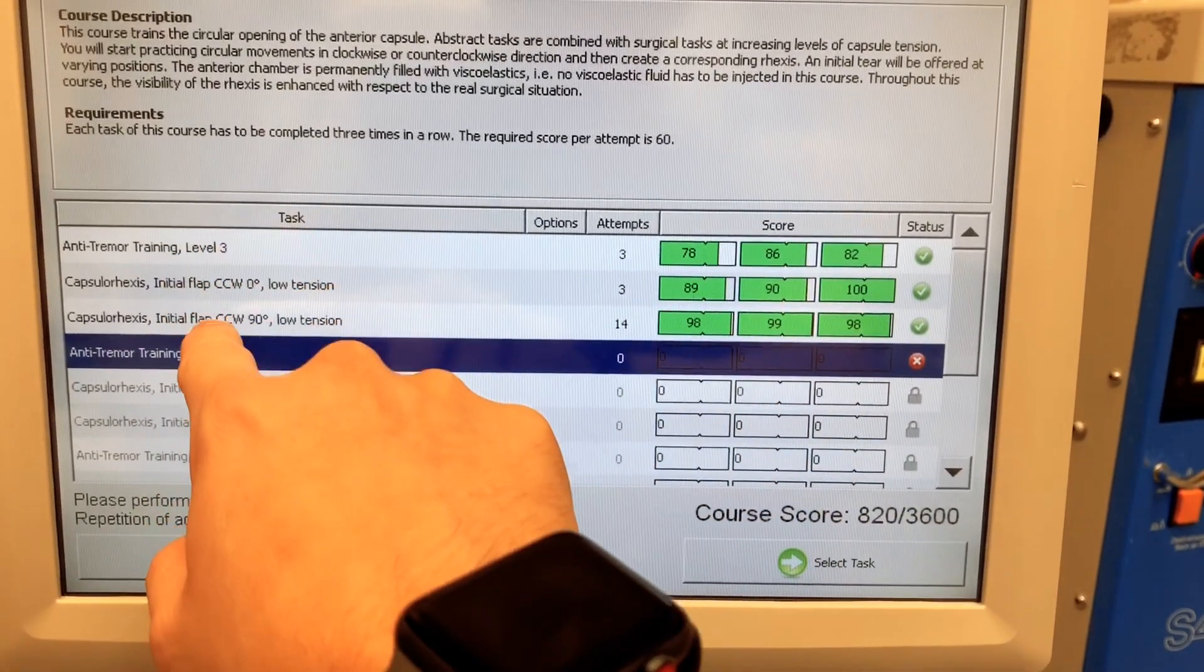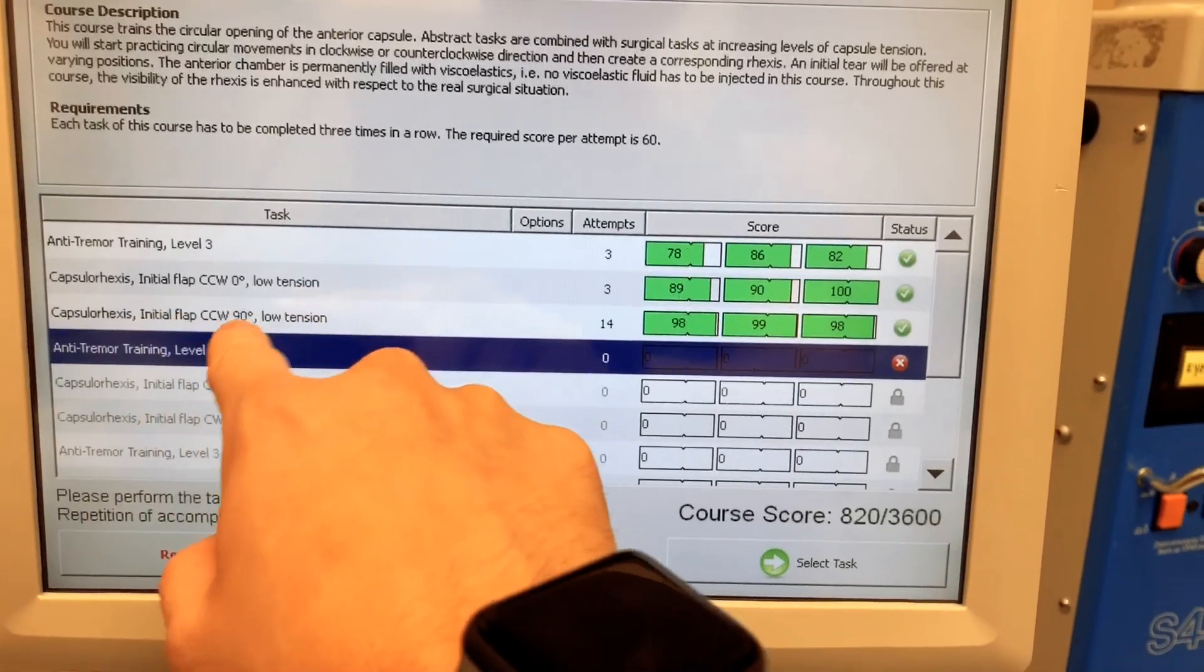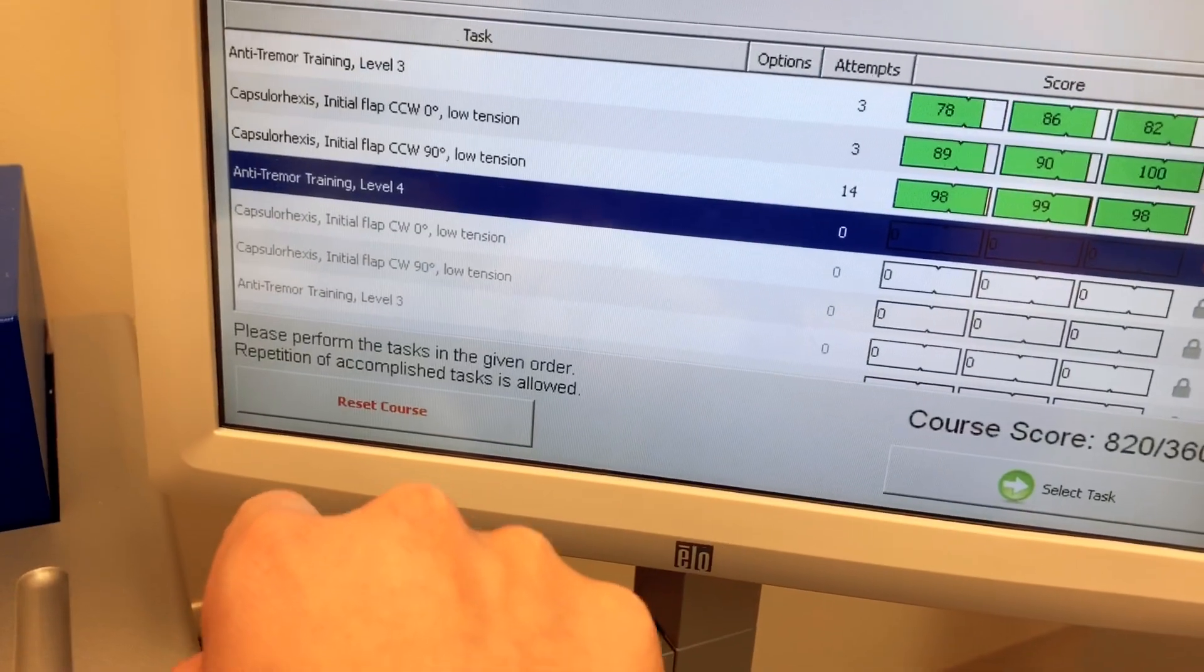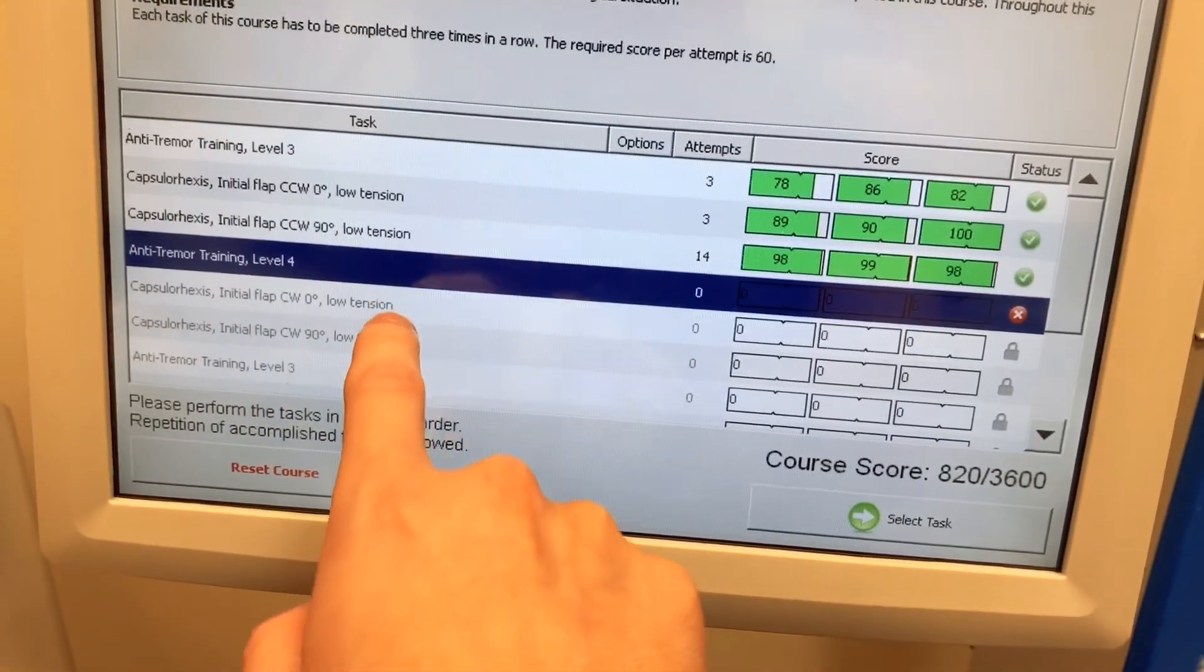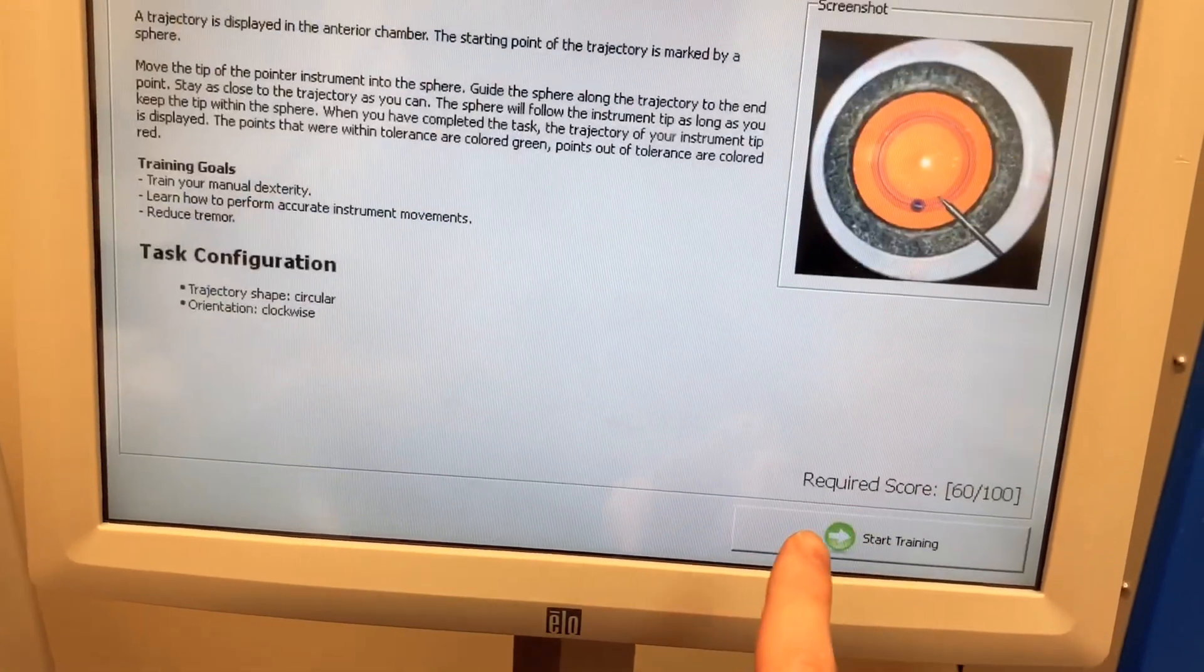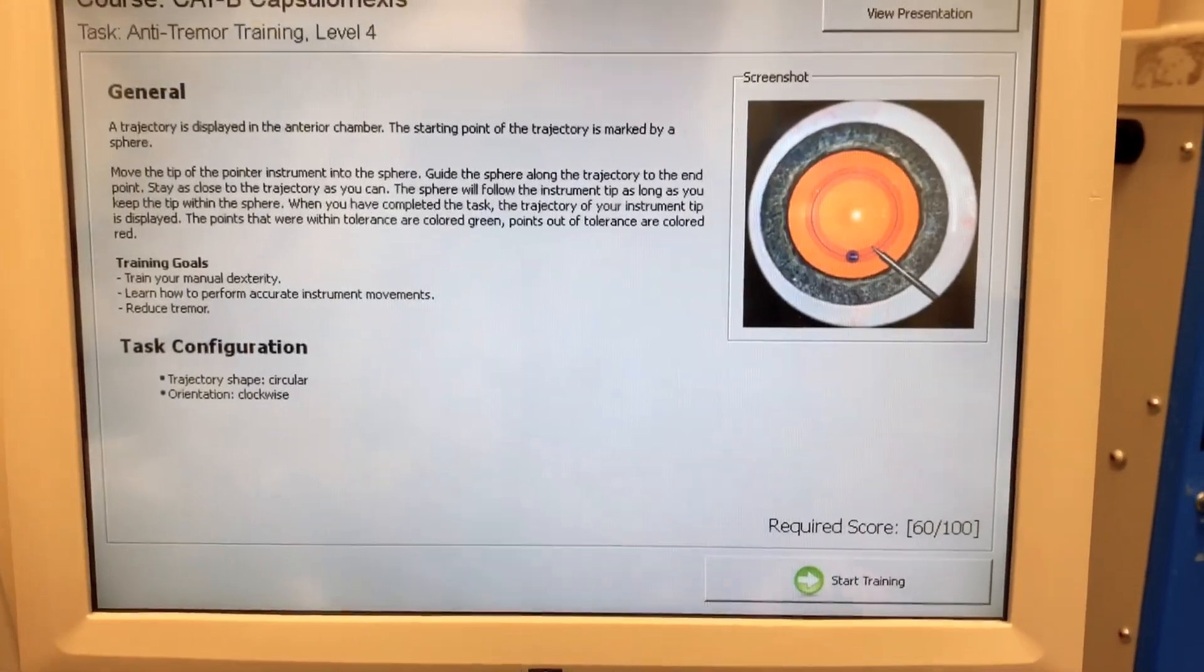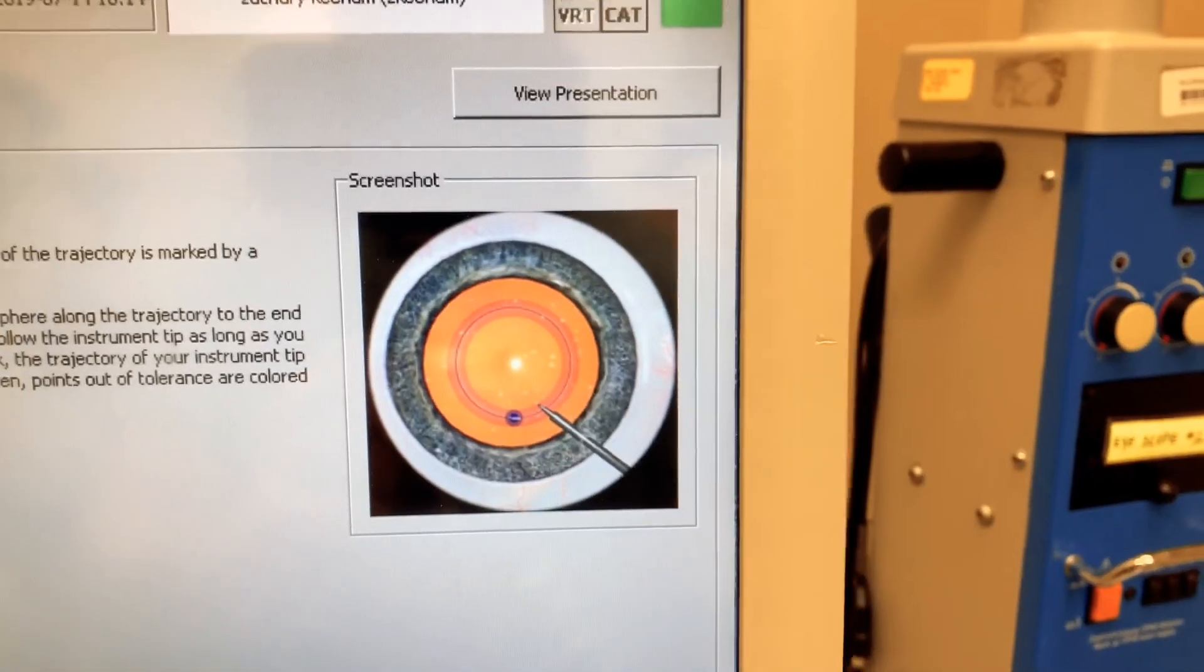And we're on the capsule rhexis part. I've already done the capsule rhexis initial flap. And so now we're on anti-tremor training, which I haven't finished. That's where I left off. So we select task. It tells us what to do and then it'll mimic the eye on the screen and then we'll get the instruments in the eye and actually practice.